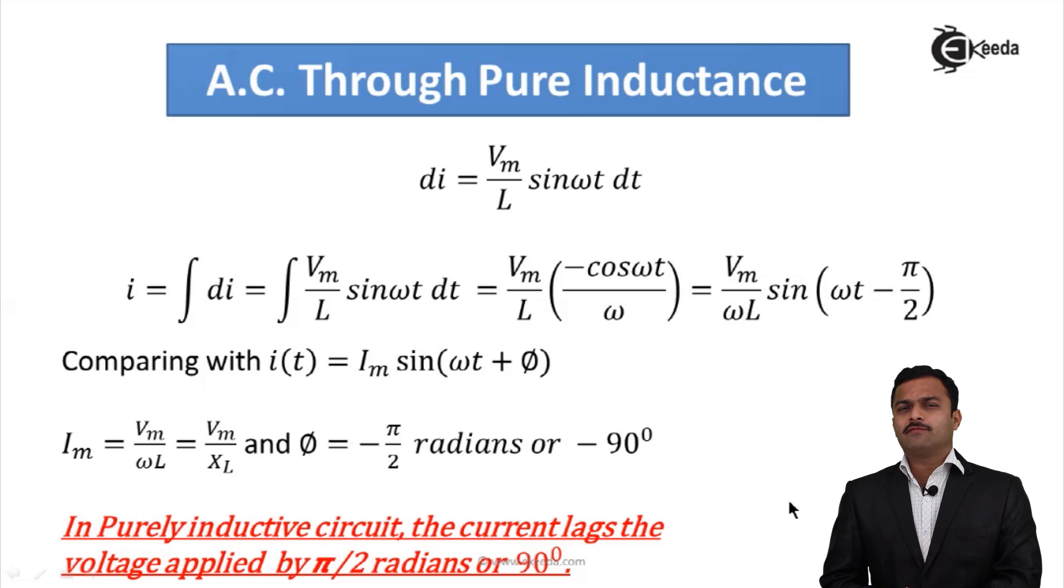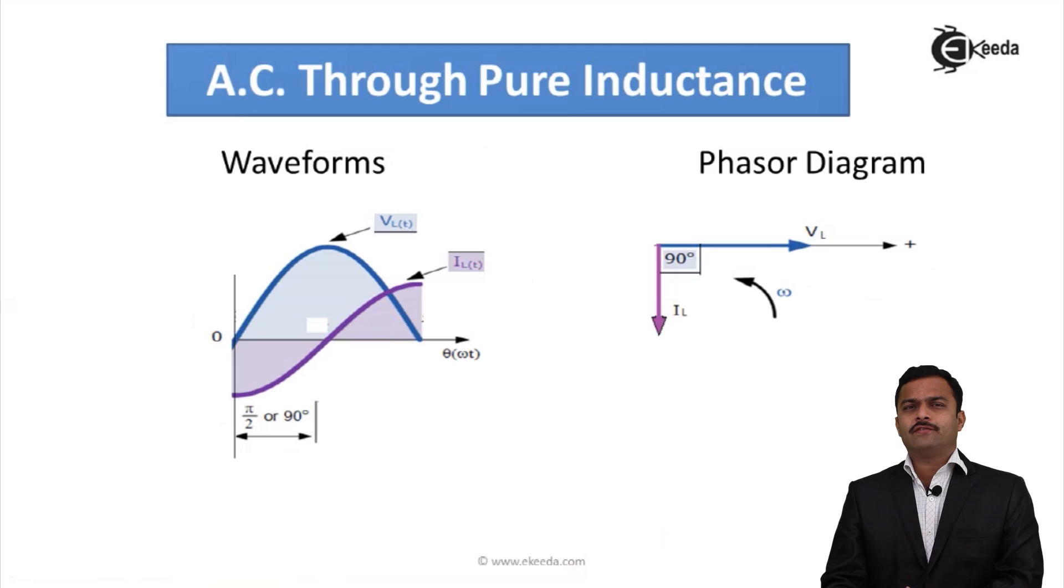The phase angle of current flowing through inductor is having a phase angle of 90° and that is a minus 90° means it is lagging. See the waveform and the phase angle, this is the reference I have taken, that is VL, and current is delayed from this reference by angle π/2 radians or 90°.